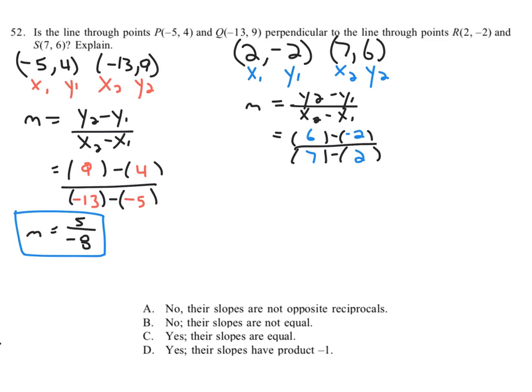Calculating this out, we get 6 minus negative 2 is the same as 6 plus 2, 8 over 7 minus 2, 5. So we've got a slope of 8 over 5, and we will box it.